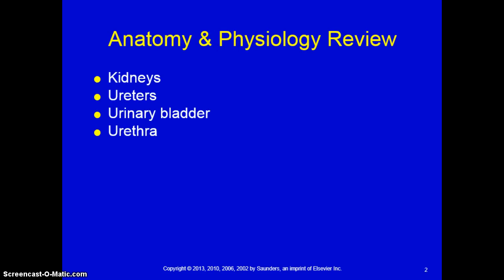We're going to do a brief anatomy and physiology review starting with the kidneys. There are normally two kidneys located in the peritoneum, one on either side of the spine. The adult kidney is typically four to five inches long, two to three inches wide, and about an inch thick. The left kidney is slightly longer and narrower than the right.